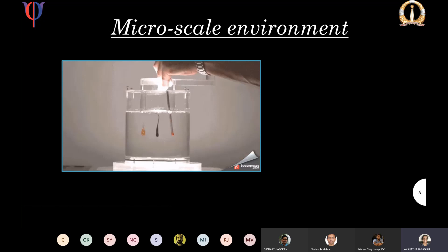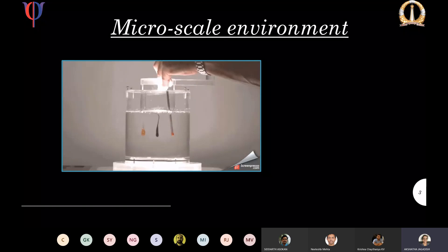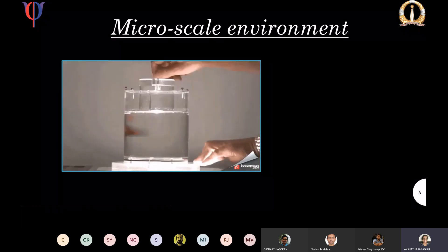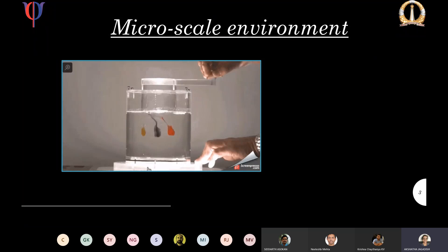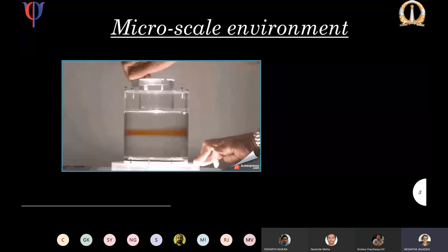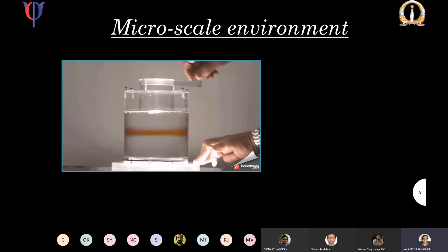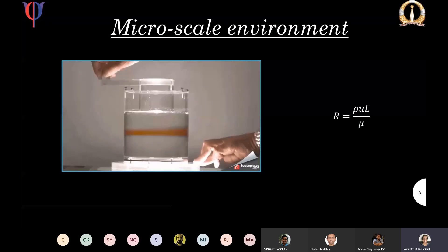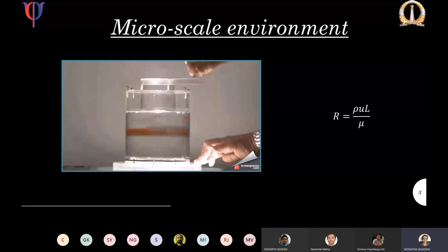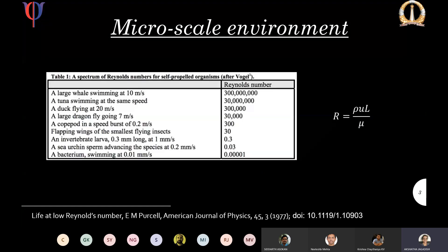Now that we see the research area is worth pursuing, let us first understand the nature of physics at micro scale. This clip shows a very important characteristic of the micro scale environment. The experimenter drops blobs of colour in silicon, which emulates micro scale characteristics at macro scale, stirs the mixture, and retraces his movement. We can observe that the blobs regain their original shape. This characteristic is captured by a physical quantity called the Reynolds number. This value reduces as the size of the robot decreases.